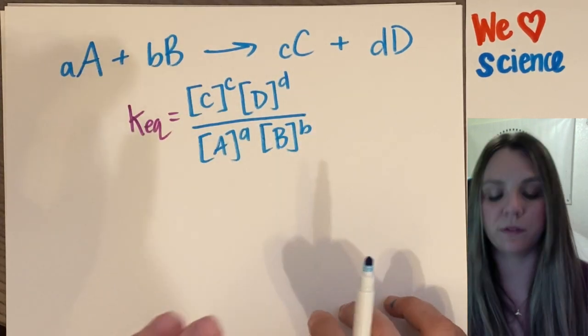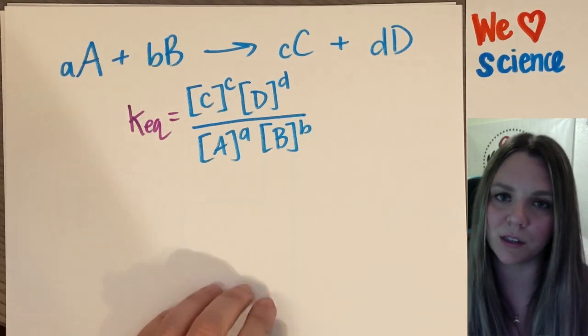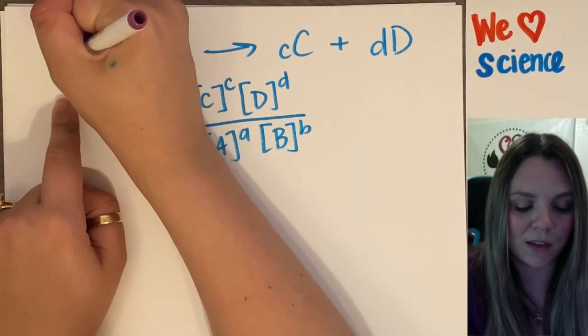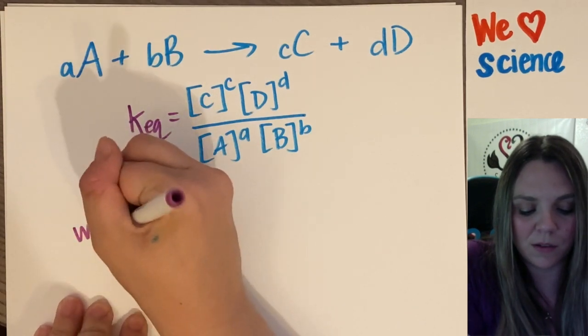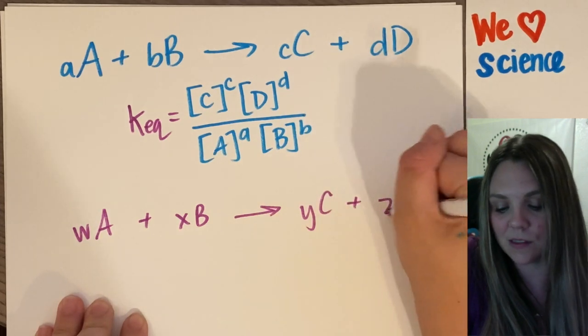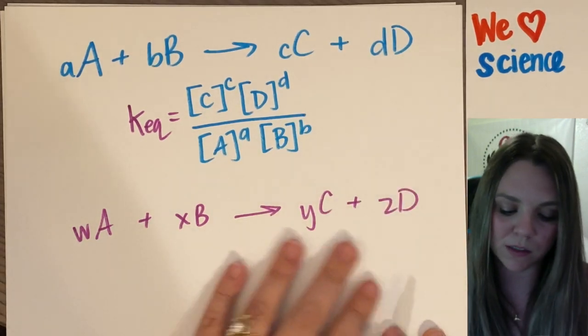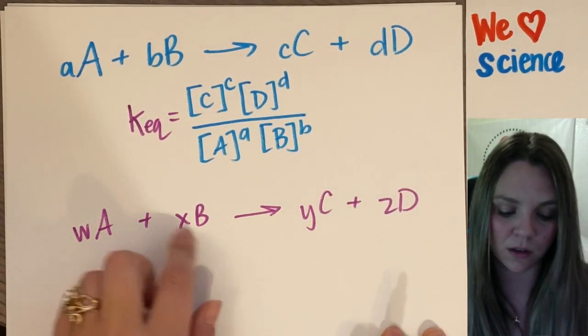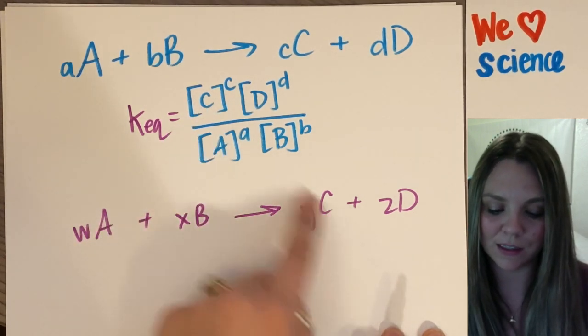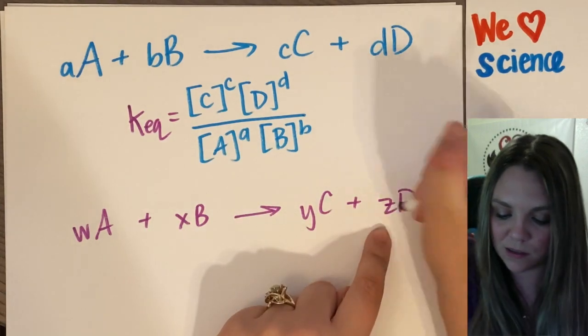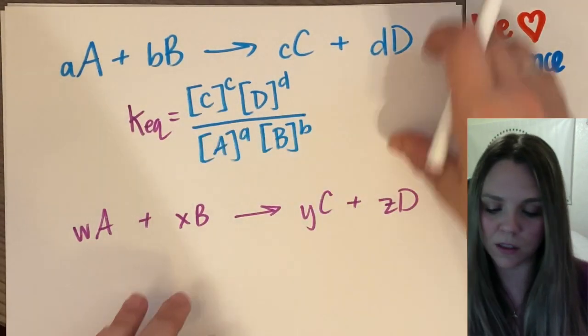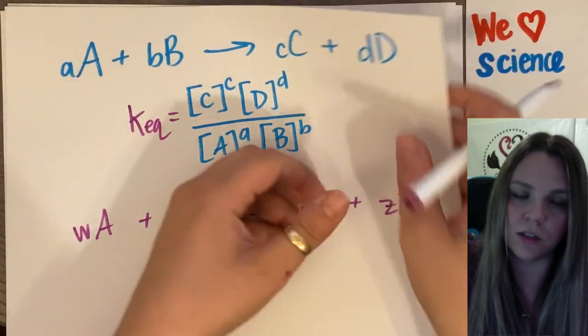If you're looking on the Googles or if you're looking in your book, actually your book is worse. Your book uses, instead of A, it uses wA plus xB to make yC plus zD. Why does it do this to you? I don't know. Who cares? It's just the generic way of writing it out. So this would say like C to the y power times D to the z power. Whatever. Generic. Let's look at something that makes sense, because generic ain't it.